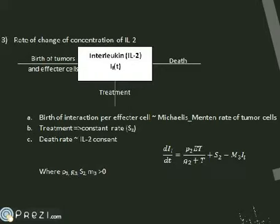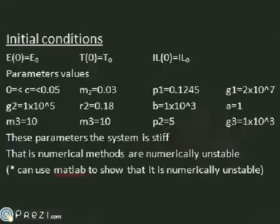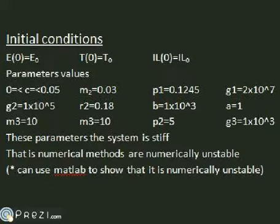Treatment can add to the concentration of interleukin, and its death is caused by the effectors using it to kill tumor cells. Analyzing our initial conditions, we notice that the numerical methods are numerically unstable.